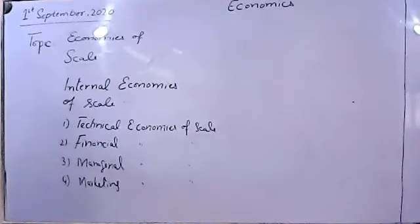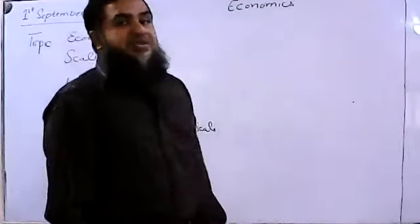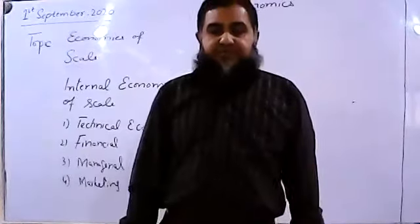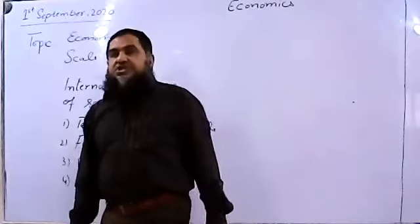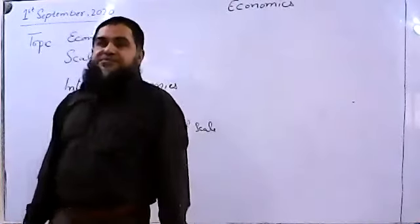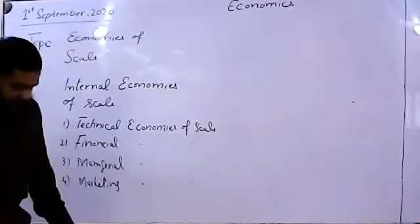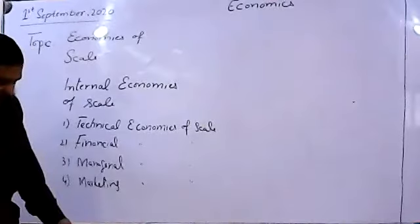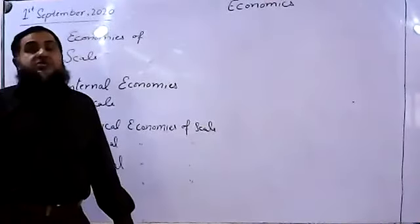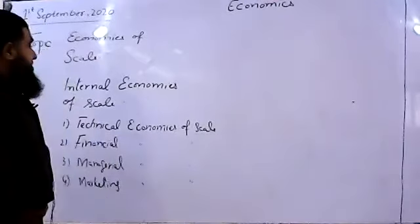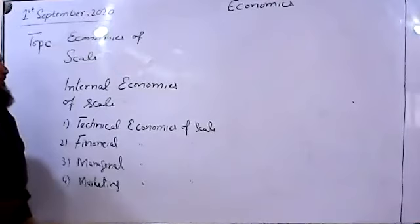Last time we studied that returns to scale — that was about if inputs are changed by the firm, how output will be changing in proportion to the change in inputs. That was giving us different types: constant returns to scale, increasing returns to scale, and decreasing returns to scale. So all these were studied in our last lesson.